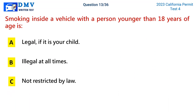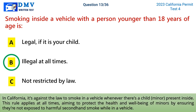Question 13: Smoking inside a vehicle with a person younger than 18 years of age is. A) legal if it is your child, B) illegal at all times, C) not restricted by law. The correct answer is B. In California, it's against the law to smoke in a vehicle whenever a child minor is present. This rule applies at all times, aiming to protect the health and well-being of minors by ensuring they are not exposed to harmful second-hand smoke while in a vehicle.